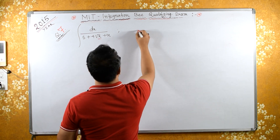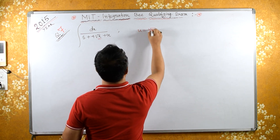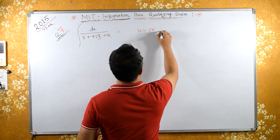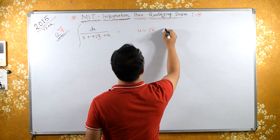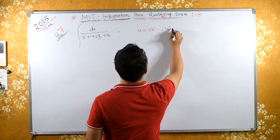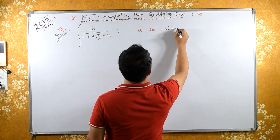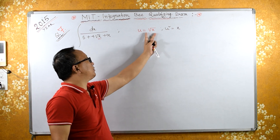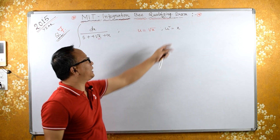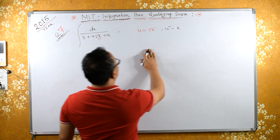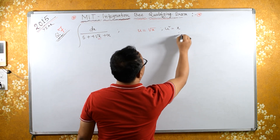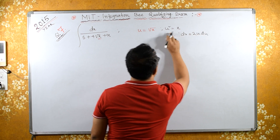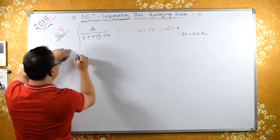Let u equal the square root of x. From here, squaring both sides gives u squared equals x. Now, differentiating, dx equals 2u du.